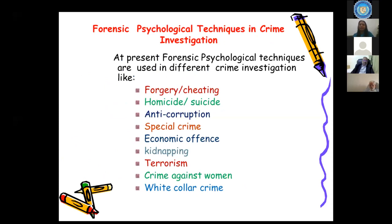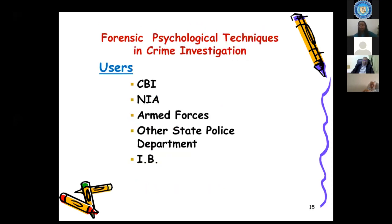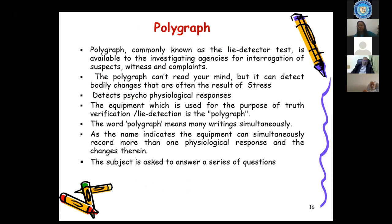At present, forensic psychological techniques are used in different types of crime investigation: forgery, cheating, homicide, suicide, anti-corruption cases, special crime, economic offenses, kidnapping, crime against women, and white-collar crime. The users of these techniques include CBI, NIA, Army forces, other state police departments, and I.B. — all are using forensic psychological techniques for crime investigation.